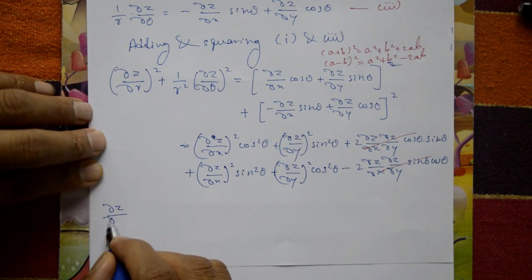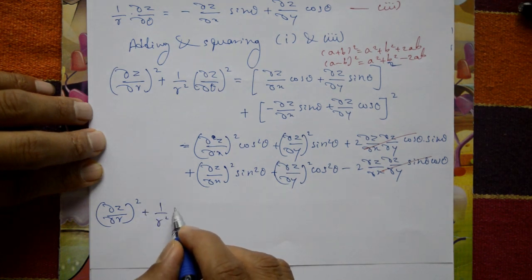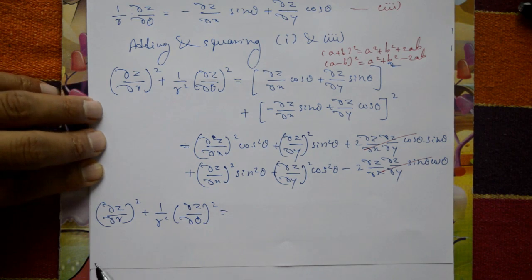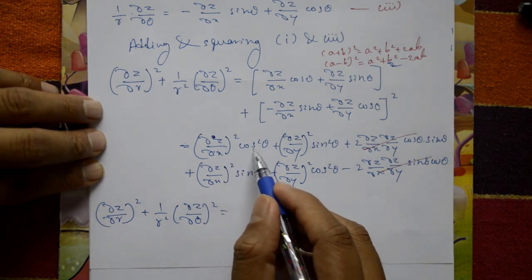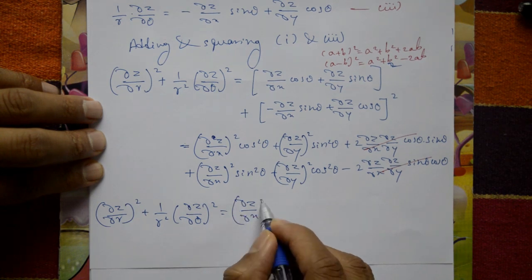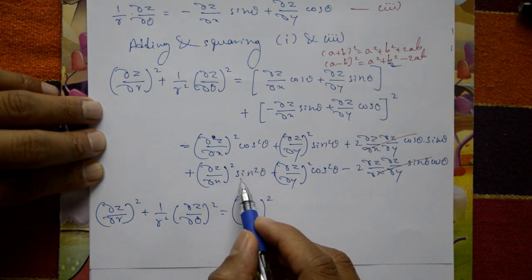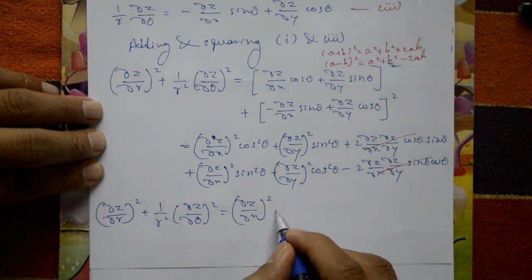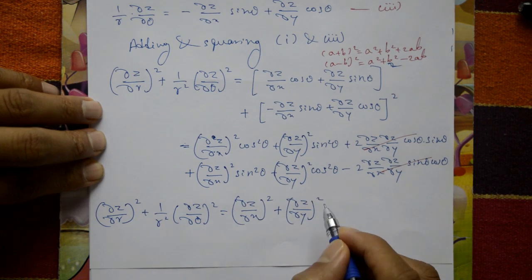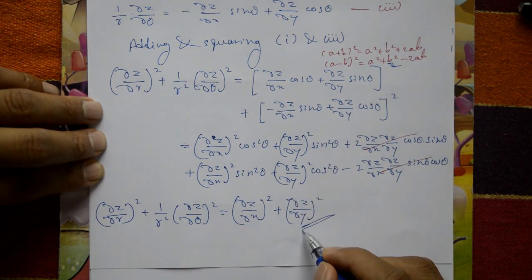So dou z by dou r whole square plus 1 by r square into dou z by dou theta whole square is equal to dou z by dou x whole square into (cos²theta + sin²theta) plus dou z by dou y whole square into (sin²theta + cos²theta), which equals 1. Therefore this equals dou z by dou x whole square plus dou z by dou y whole square. This is the required answer.